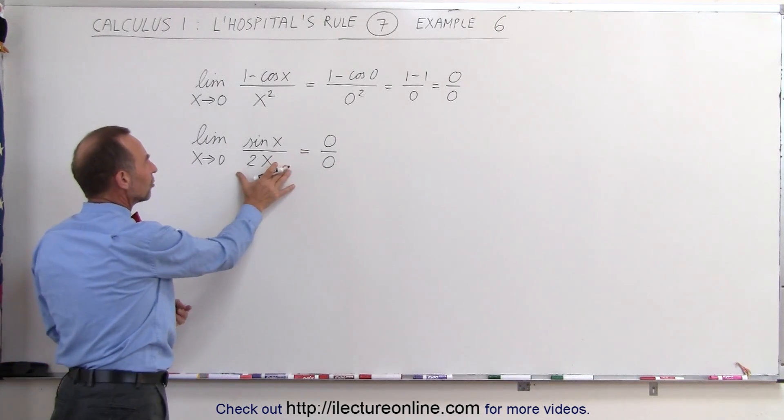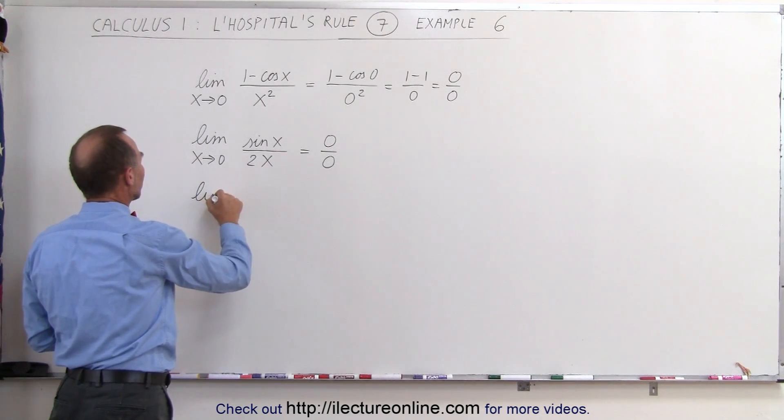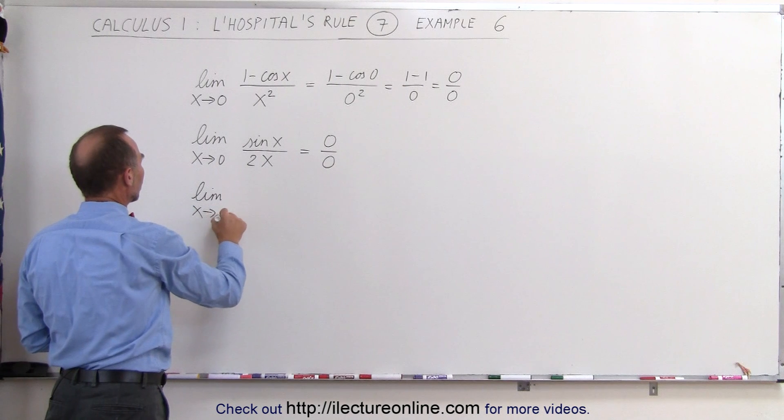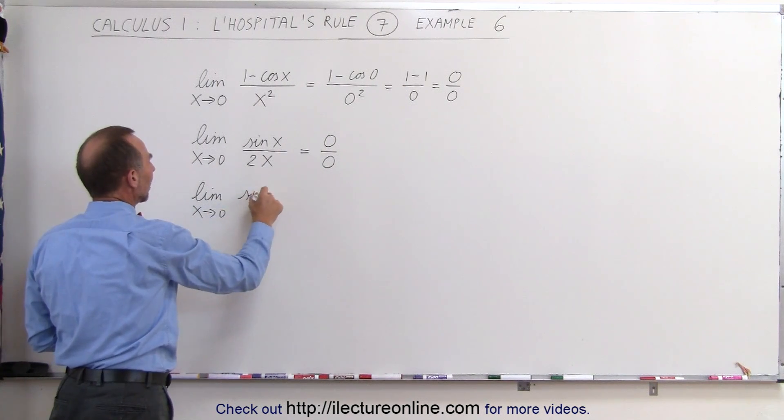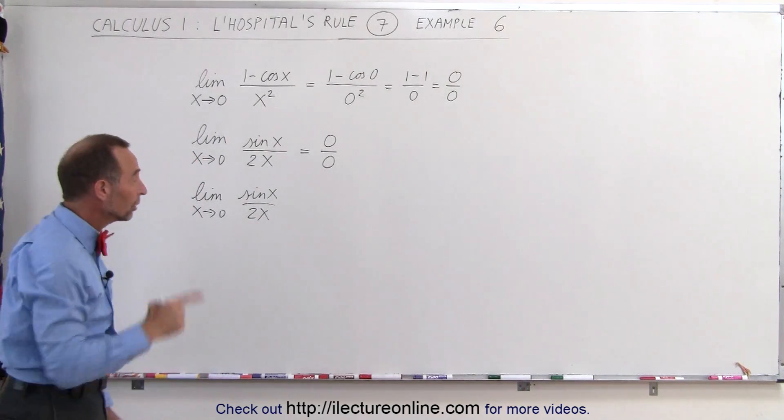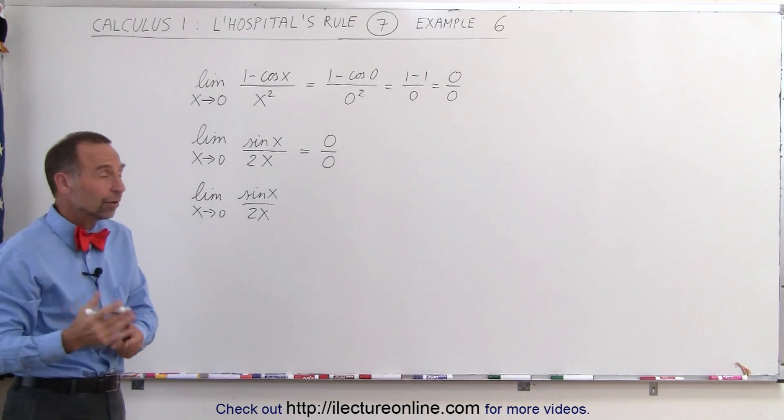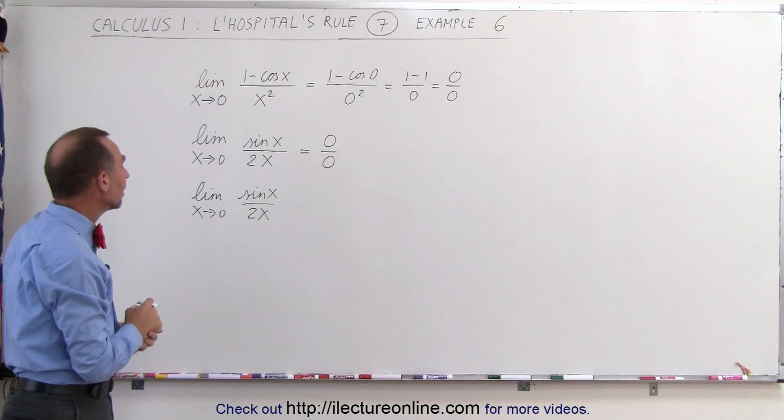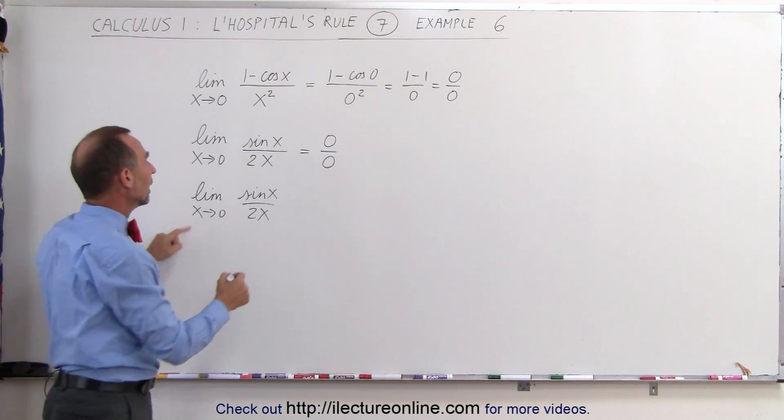But now we have a new function here. So let's say we started with the problem where we take the limit as x approaches 0 of this new function, the sine of x divided by 2x, and we apply L'Hôpital's rule to this. We should then maybe get a form that we can then plug in the limit for x. Let's go ahead and do that.